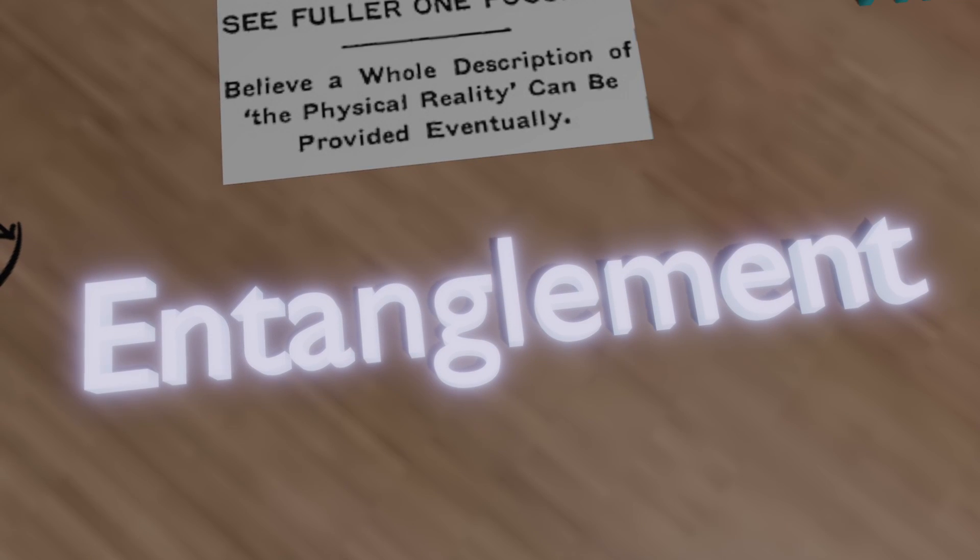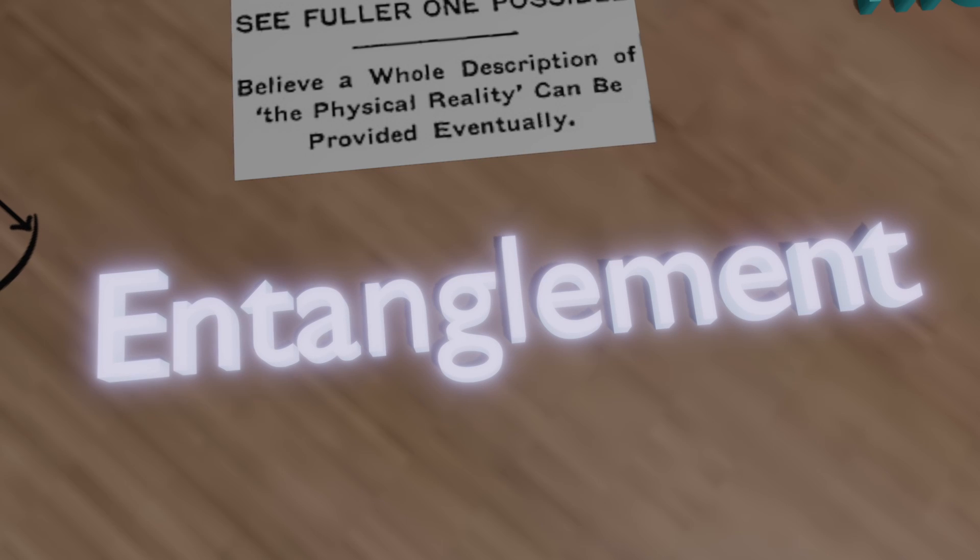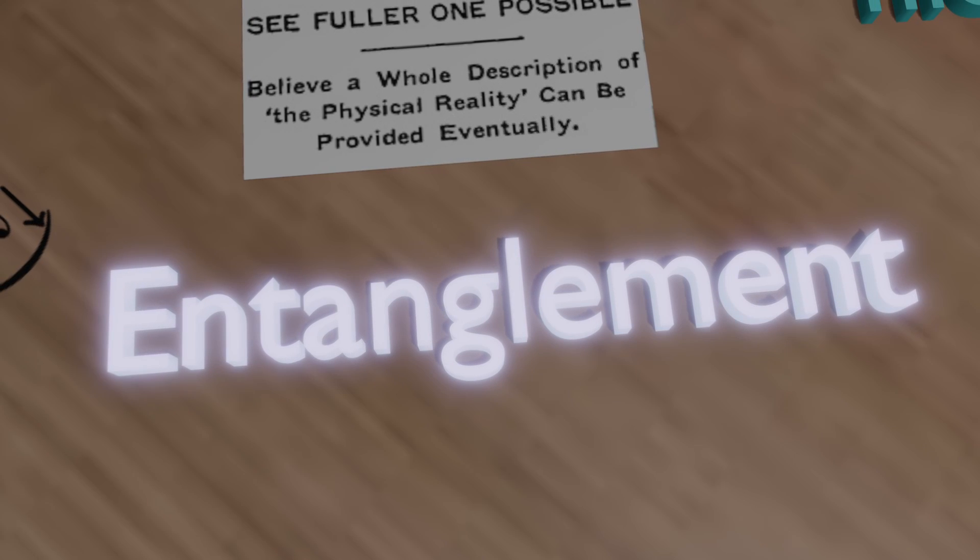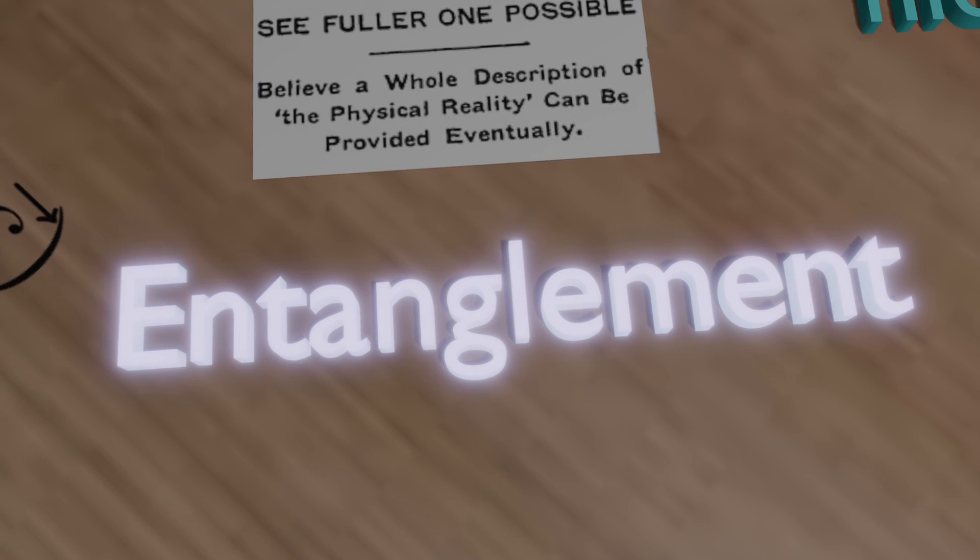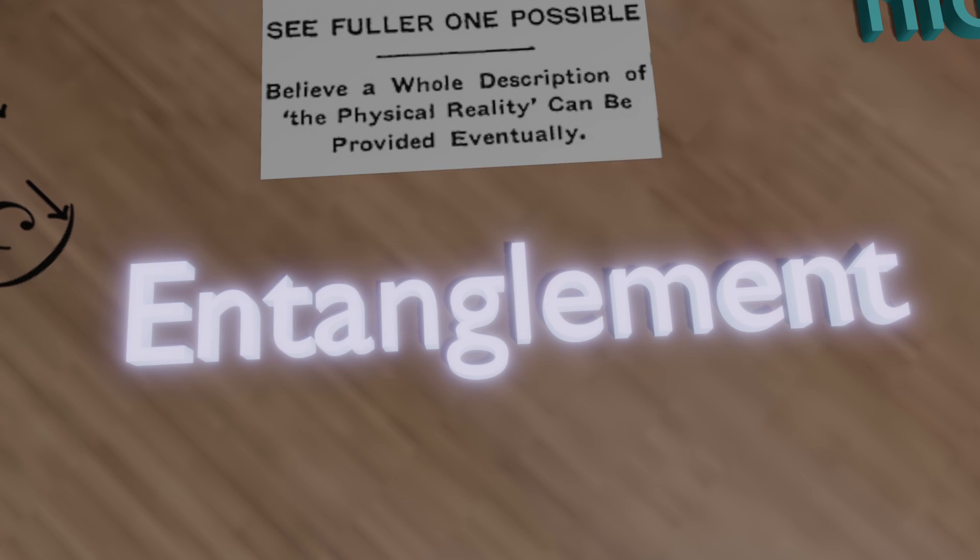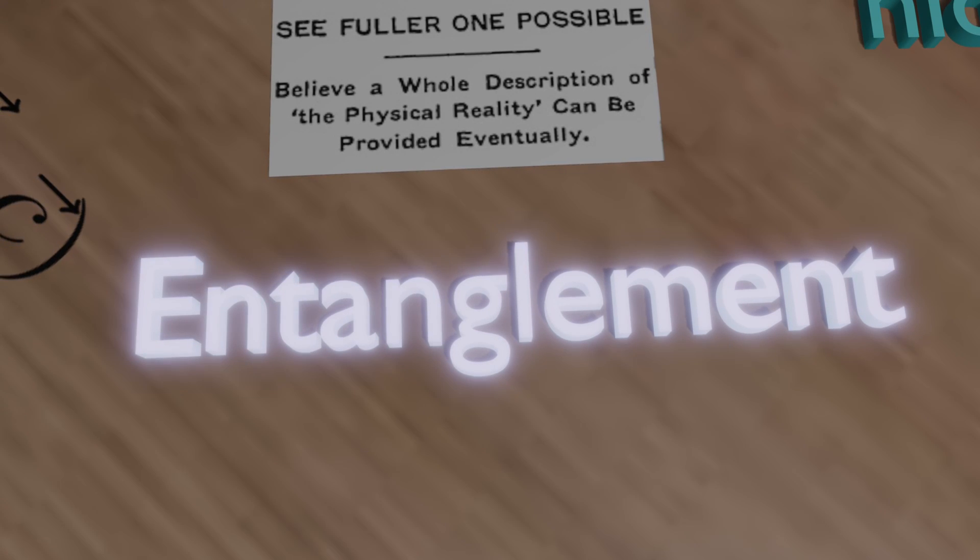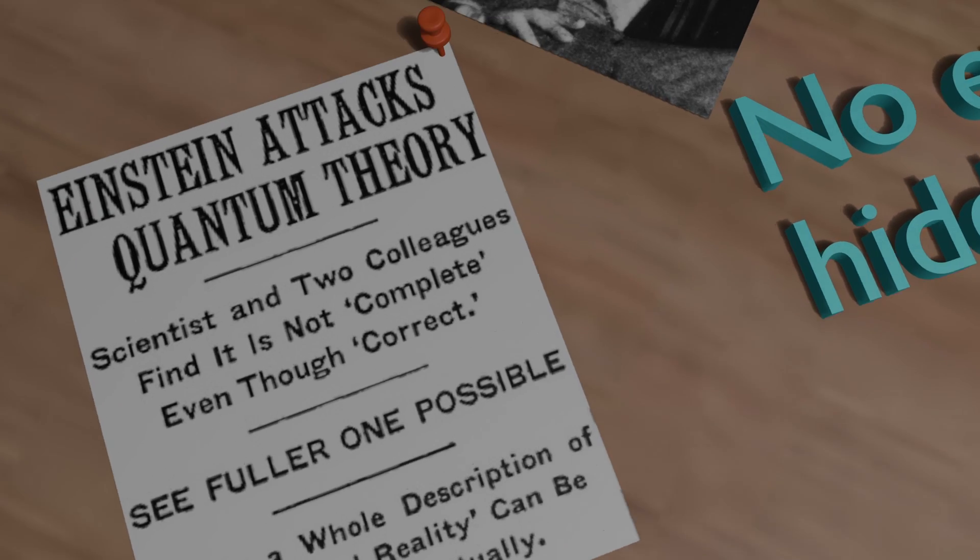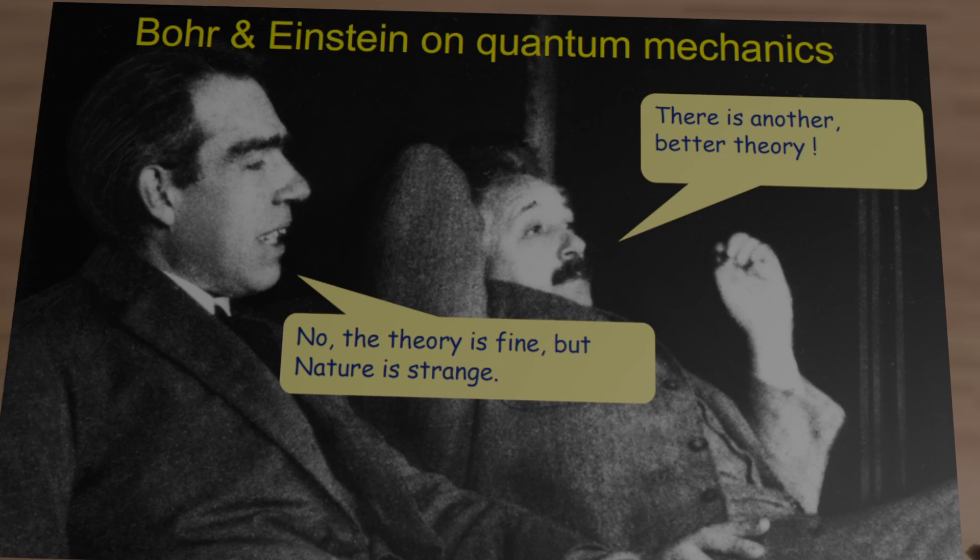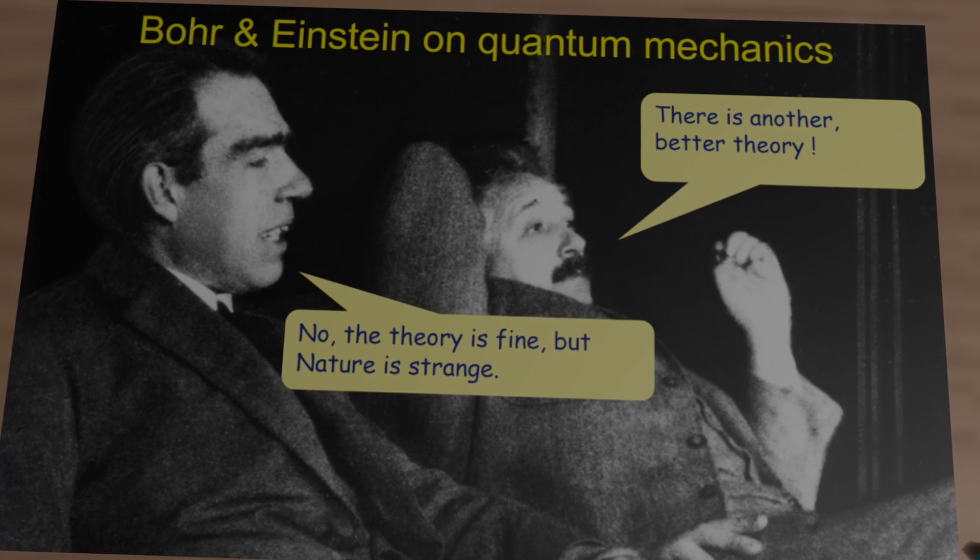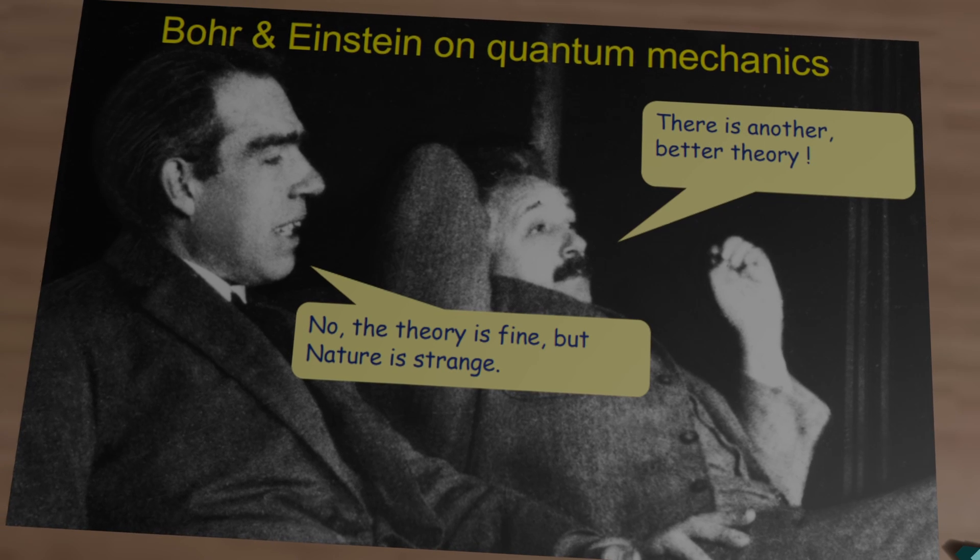They proposed that there must be some hidden variables that could explain the particles' behaviors without violating the laws of physics. These hidden variables would restore local realism, keeping everything in line with Einstein's view of the universe. This paper set the stage for a decades-long debate about the completeness of quantum mechanics.